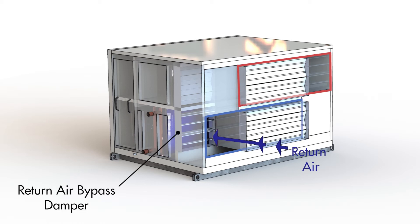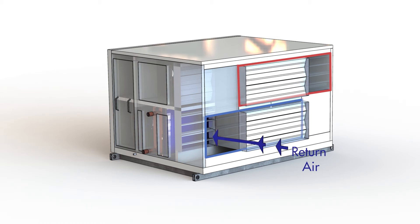Note that the return air bypass damper is the lower damper shown here in the bypass section. If you can recall from our previous video, the upper damper here is the economy cycle mode damper, which instead allows the return air to flow to exhaust when it is open. As opposed to economy cycle mode, which is either on or off, return air bypass mode can modulate.